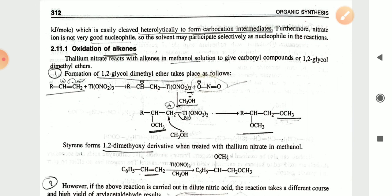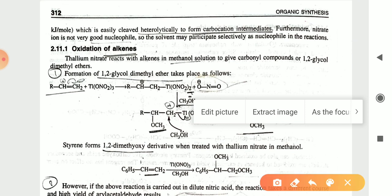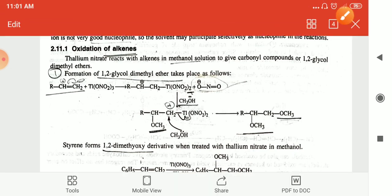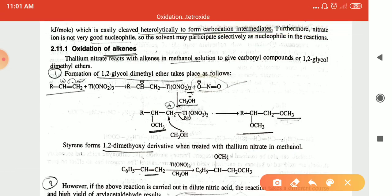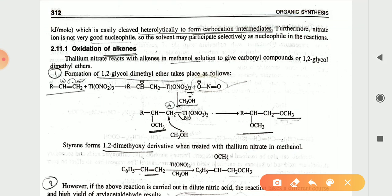For oxidation of alkenes, thallium nitrate reacts with the alkene in a methanol solution. The formation of a 1,2-glycol dimethyl ester takes place by the following reaction: the double bond in the alkene breaks and combines with thallium nitrate to give an intermediate, with NO2 present.